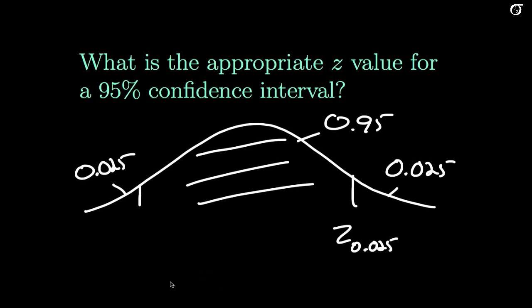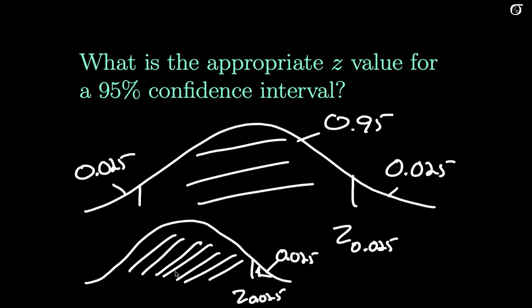Now you have to get it in the proper format. My tables and the computer give area to the left. So when I look up z 0.025, I'm going to have to find that the proper way. I know this area out here is 0.025 and that means this remaining area to the left has to be 1 minus 0.025, which is 0.975. And that is how computers and tables give you the value.